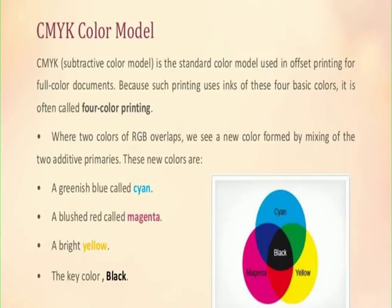Let us understand the CMYK color model. A CMYK color model is a standard color model used in offset printing for full color documents. Because such printing uses inks for four basic colors, it is often called 4-color printing. Where two RGB colors overlap, a new color is formed by mixing two additive primaries. These new colors are a greenish-blue called cyan, a plus-red called magenta, a bright yellow, and a key color called black.